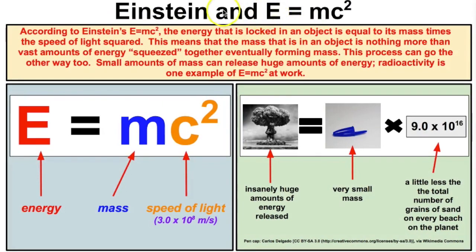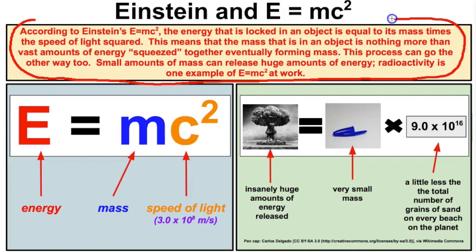The most famous equation in the whole wide world — according to Einstein's E equals mc squared, the energy that is locked in an object is equal to its mass times the speed of light squared. This means that the mass in an object is nothing more than huge amounts of energy squeezed together, eventually forming mass. And if we work this process backwards, we can unlock insanely huge amounts of energy from the tiniest amounts of mass — energy comparable to that of an atomic bomb.